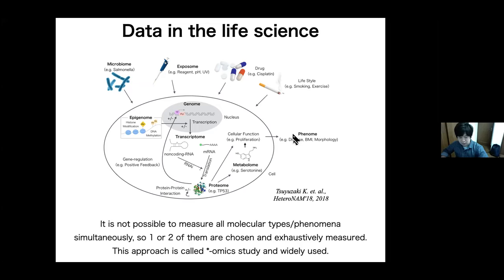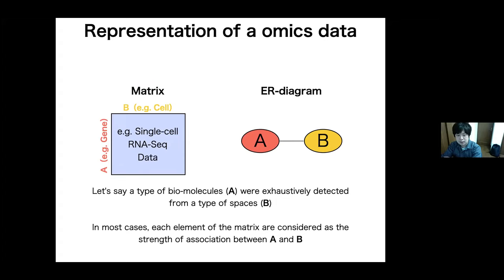For example, genomics measures all DNA sequences and transcriptomics measures all RNA molecules. Since these omics datasets are comprehensive measurements of certain biomolecules in a certain space, it can be represented as a matrix. For example, in the single-cell RNA-seq data, all gene expressions are measured in all cells. So let's say a type of biomolecules is named A and detected spaces is named B respectively. In ER diagram, we will see entity A and entity B are connected in most cases. Each element of the matrix are considered as a strength of association between A and B.